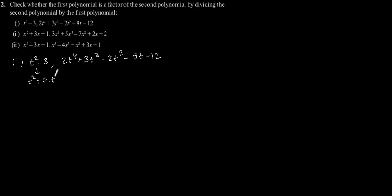First problem: t squared minus 3, and 2t to the power 4 plus 3t cubed minus 2t squared minus 9t minus 12. This can be written as t squared plus 0t minus 3. If the first polynomial is a factor of the second polynomial, we will get remainder as 0. So let's divide the second polynomial by the first polynomial.